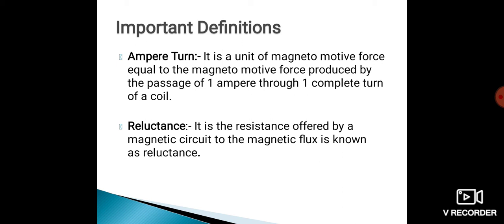Next is reluctance. It is the resistance offered by the magnetic circuit to the flow of magnetic flux, known as reluctance. It is very similar to the resistance of an electric circuit. Just as resistance is offered by an electric circuit to the flow of current, reluctance is the resistance offered by the magnetic circuit to the flow of magnetic flux.